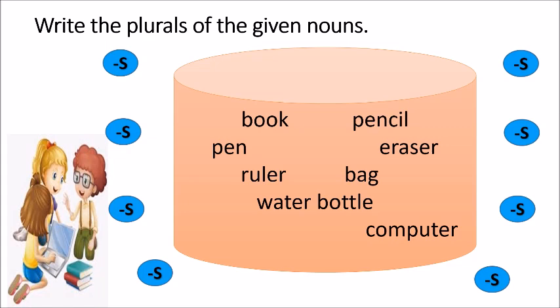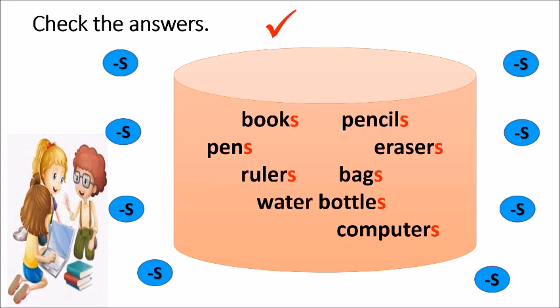Children, let's do an interesting activity. Make the plurals of the given nouns: book, pencil, pen, eraser, ruler, bag, water bottle, computer. Hope you have finished. Let's check the answers: books, pencils, pens, erasers, rulers, bags, water bottles, computers.